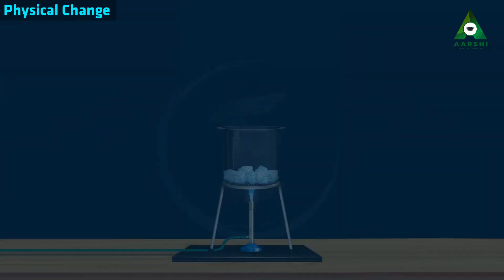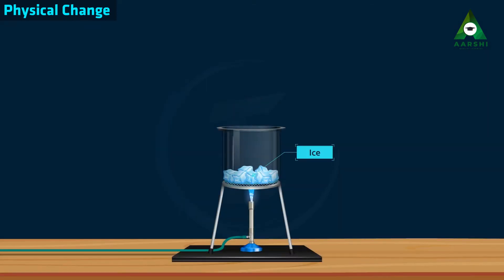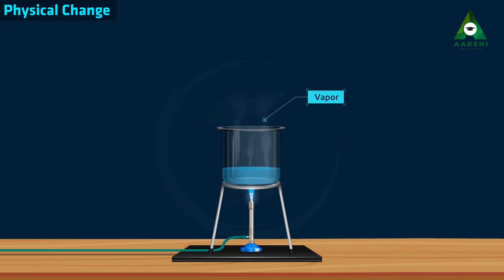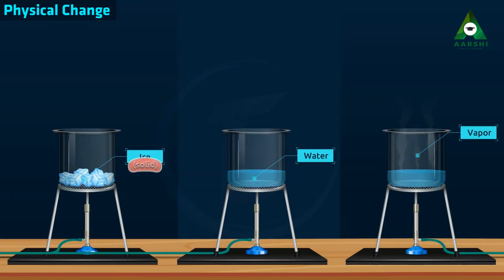By the melting of ice into water and the change of water into vapour, only the physical state of H2O changes. Ice is solid, water is liquid, and vapour is gas.